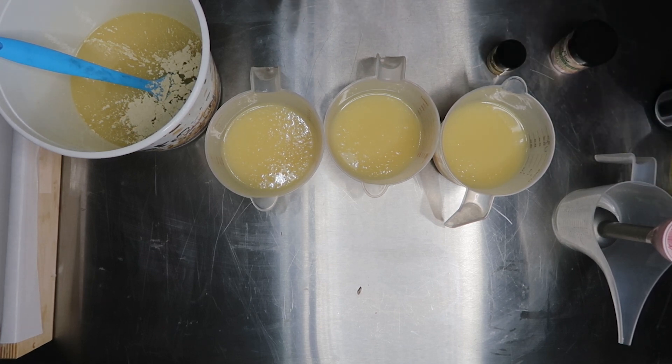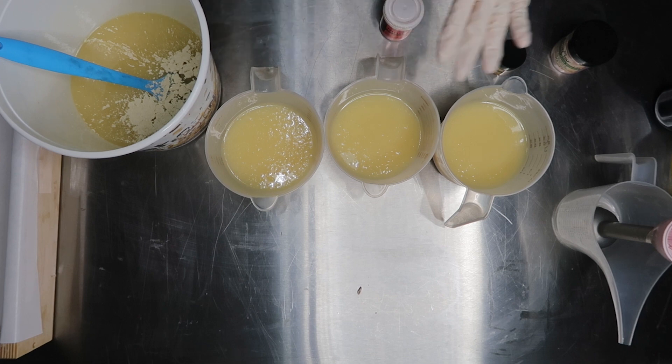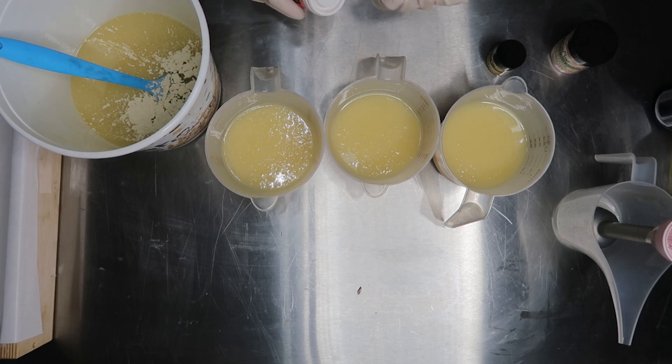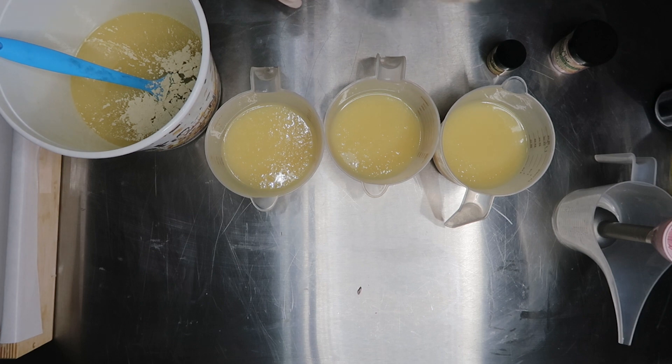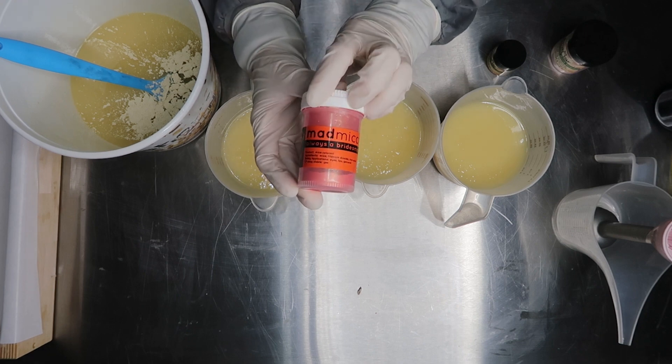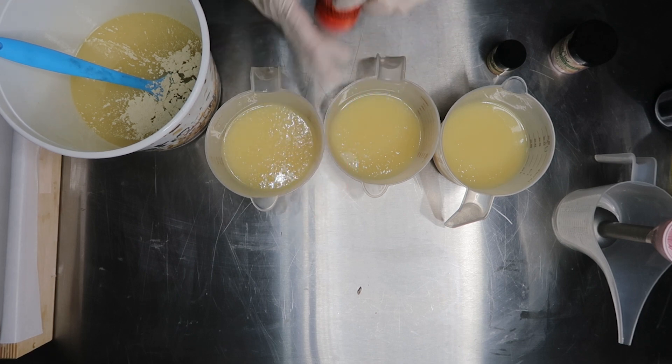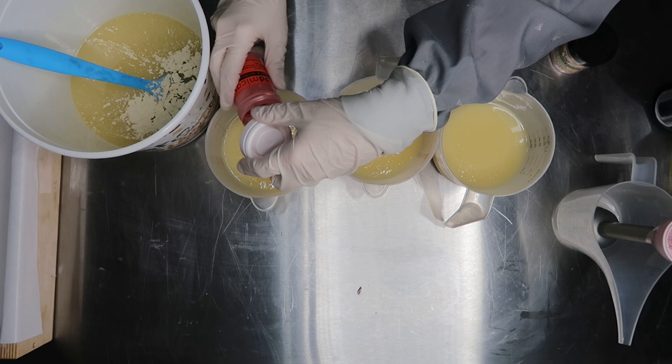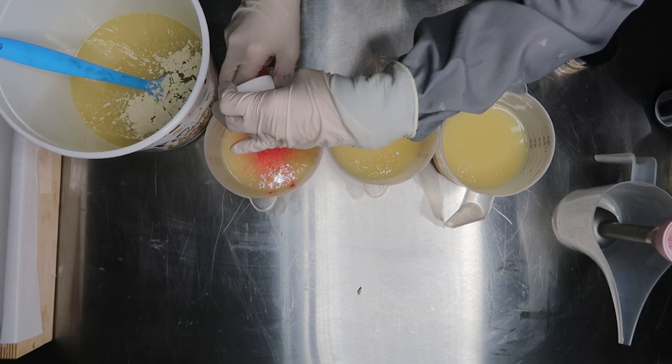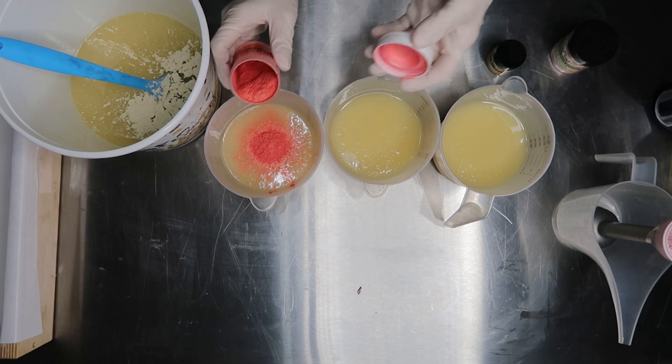So I pretty much eyeball it. I have actually measured it out before, which is great that my eyeballing was correct, but you usually want about one half tablespoon to one tablespoon, but it really depends on the manufacturer. So you always want to check out the color of the website and they'll tell you how much per pound of oil to use. And then next we're going to do Always a Bridesmaid by Mad Micas. Perfect for me. I'm always the bridesmaid.